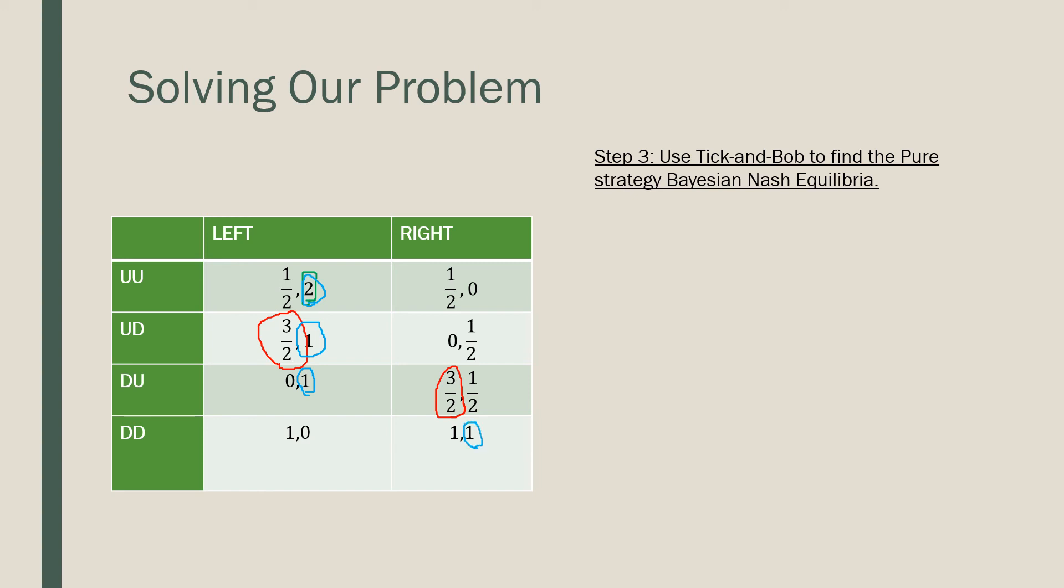So we know that here there is only one Bayesian Nash equilibrium, and that is where we have our row player doing UD, doing up if it's scenario one and down at scenario two, and our column player playing left, independent of these scenarios.